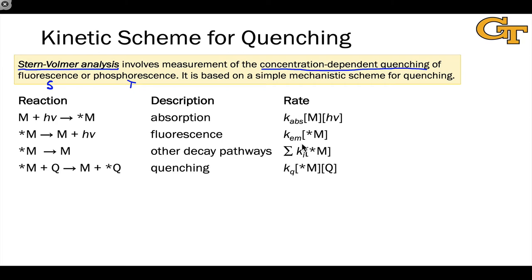The rate of fluorescence equals the rate constant for emission times the concentration of the excited state M*. For the other decay pathways, the idea is similar — we have different rate constants for each individual process, one for inter-system crossing, one for internal conversion, etc. The concentration dependence on M* is still present, since these are first order in M*. The quenching process is bimolecular.